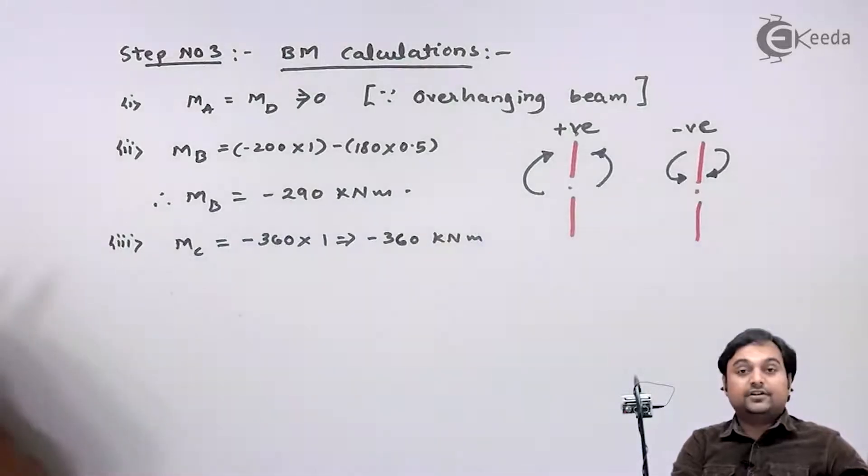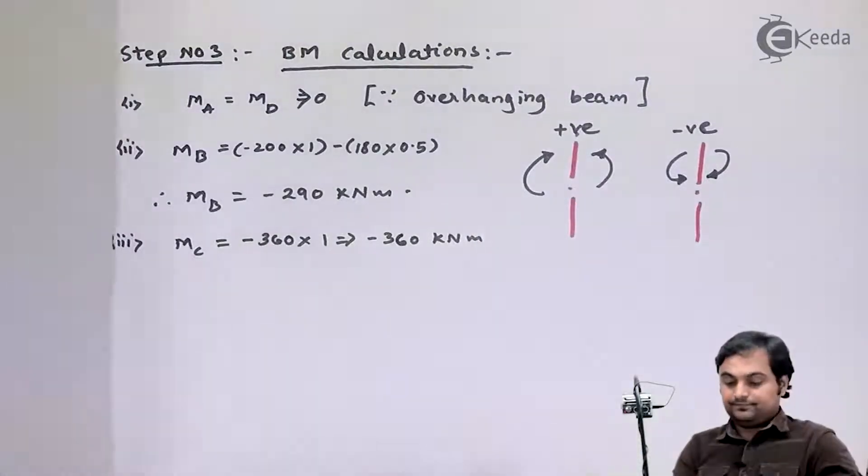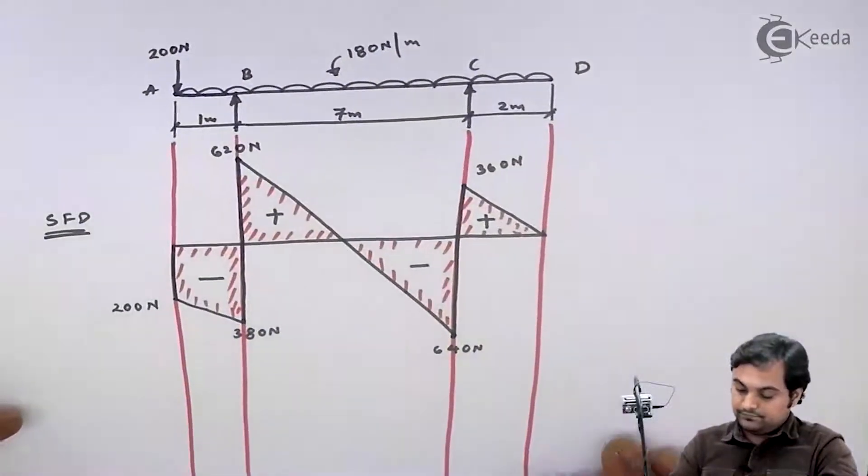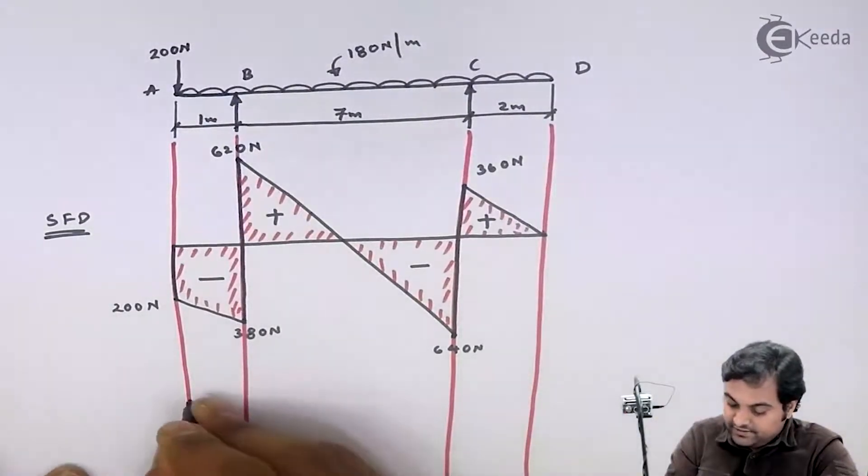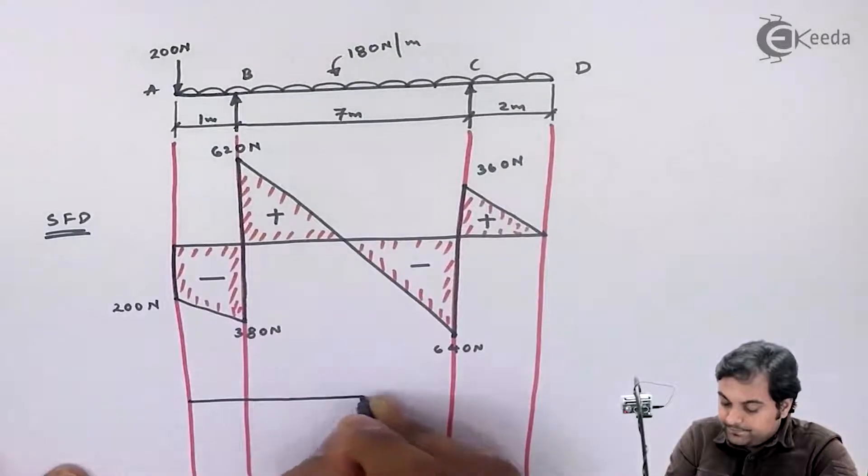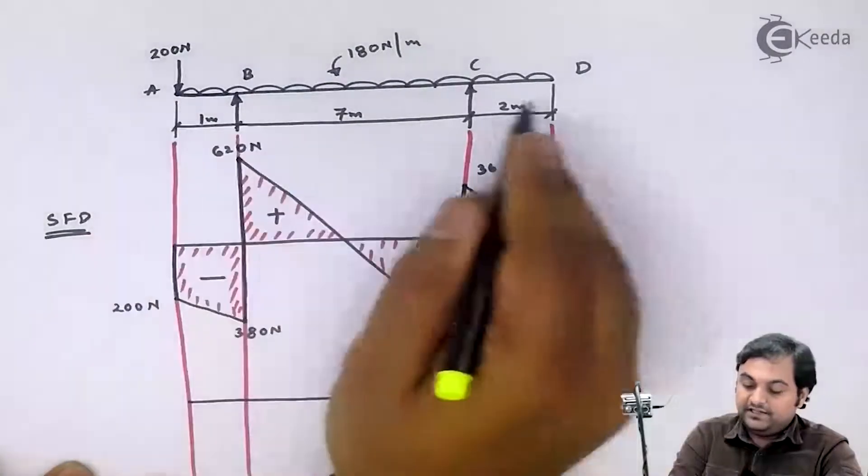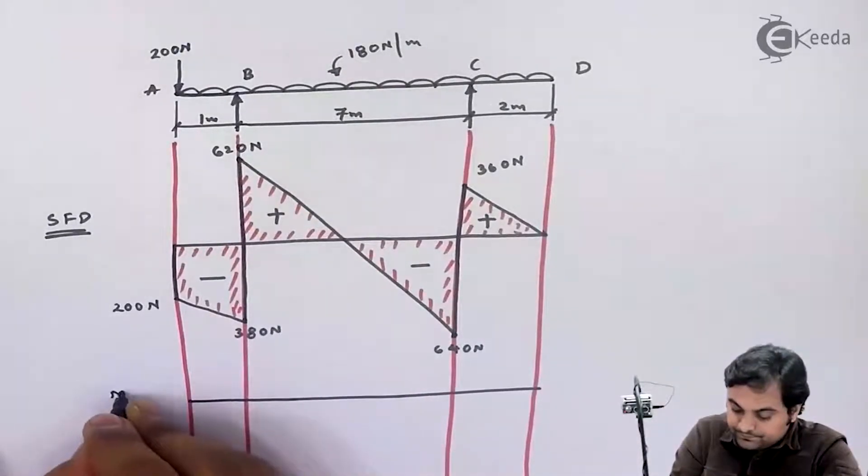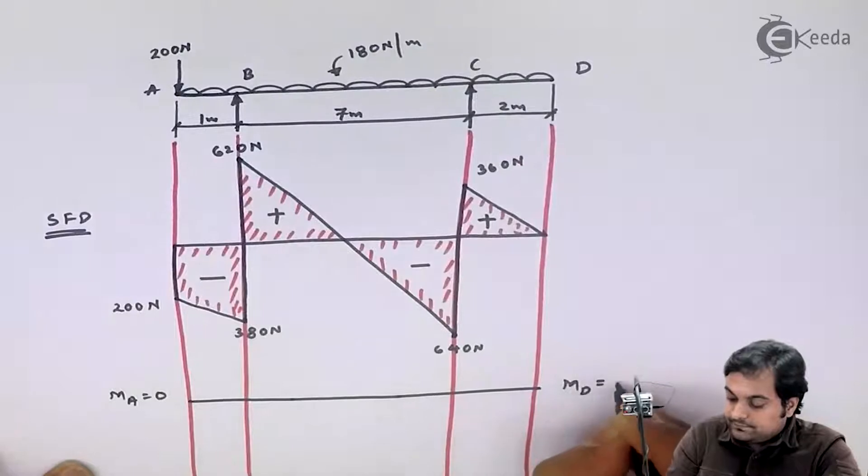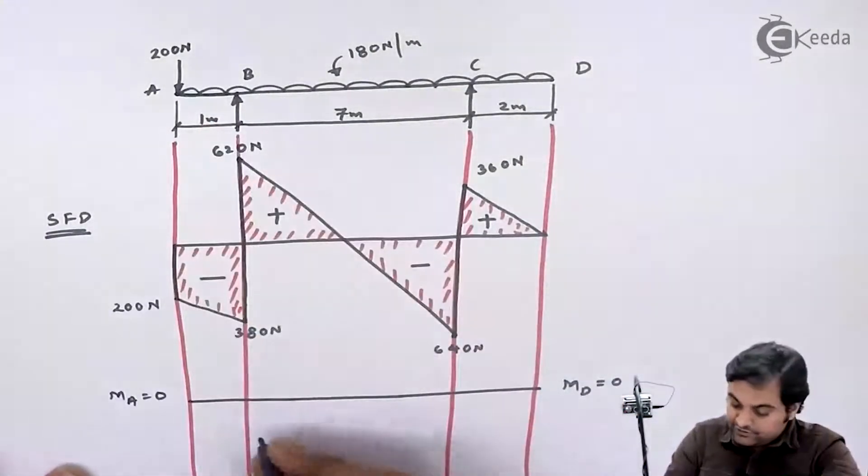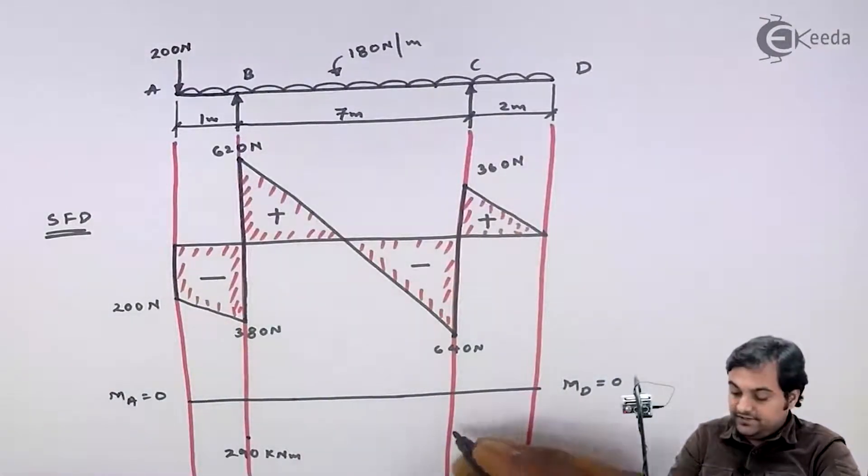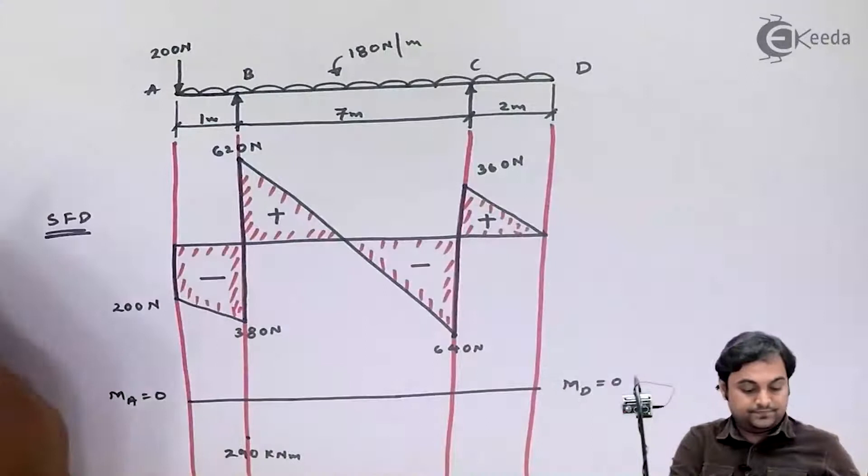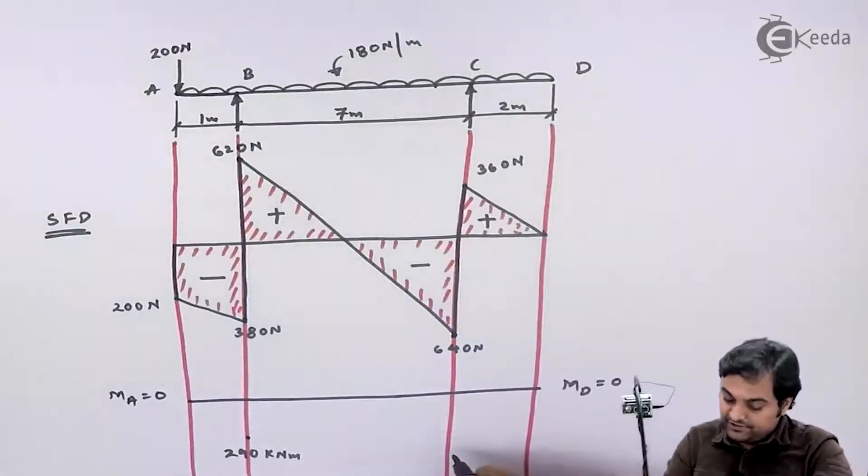Now after this, I can draw the bending moment diagram. For this, I will draw a line equal to the length of the beam. Bending moment at A and D, they are 0. At B, the value is negative, minus 290. At C, the value is 360 kilonewton meter with a negative sign.